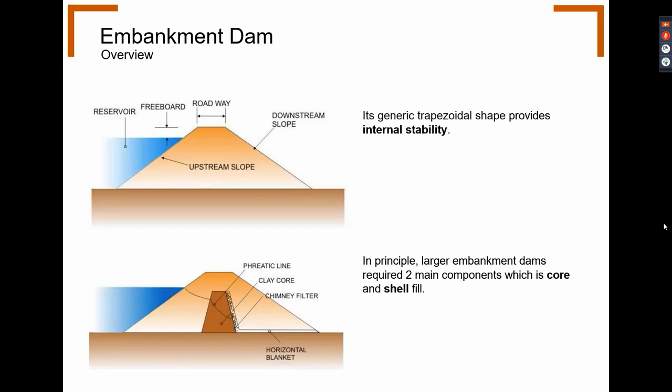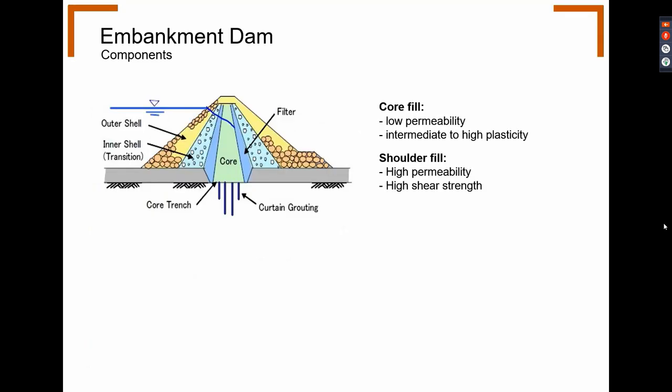Other details such as horizontal drain, toe drain, pitch protection and others are installed for higher efficiency. The core should have very low permeability and is recommended to be soil with very high plasticity. The supporting shoulder fill is composed of coarser earth fill which is highly permeable and with high shear strength for slope stability.